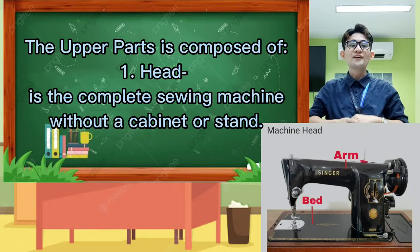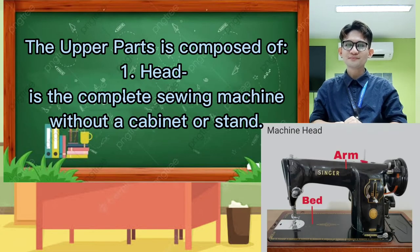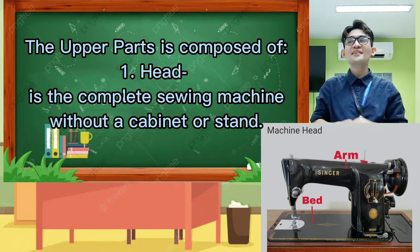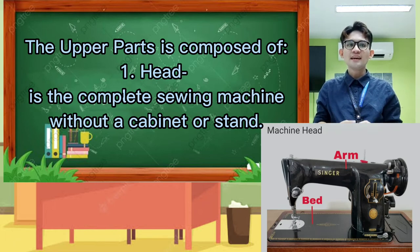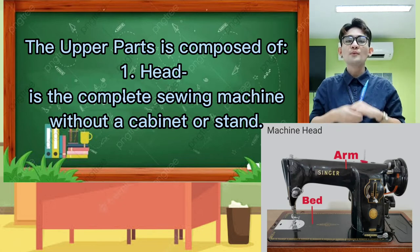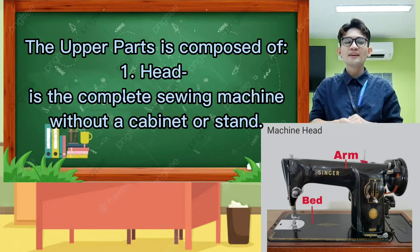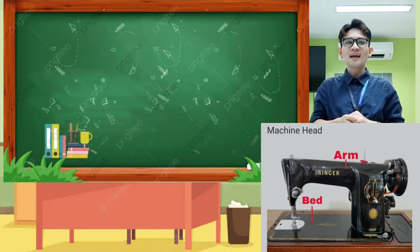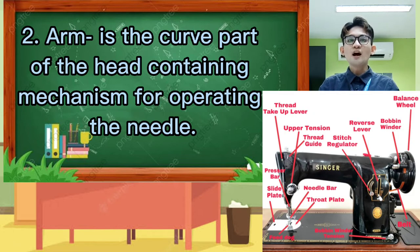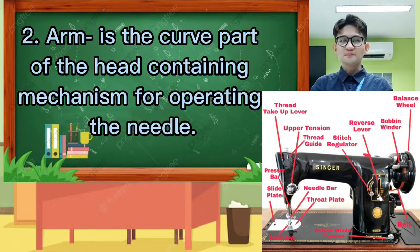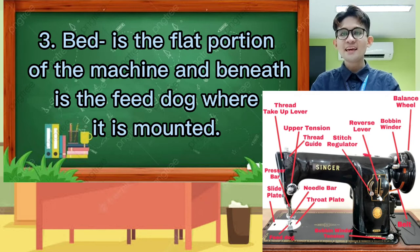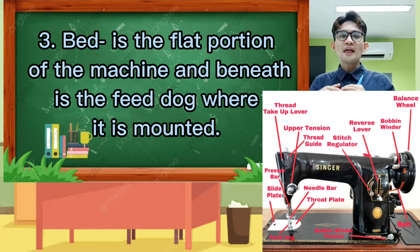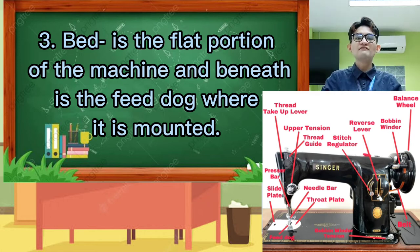Very good. The upper part is composed of, first is the head, second is the arm, third is the bed. The head is the complete sewing machine without the stand or the cabinet. And the arm is the curved part of the sewing machine containing the mechanism for operating the needle.